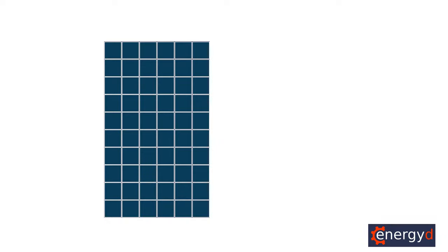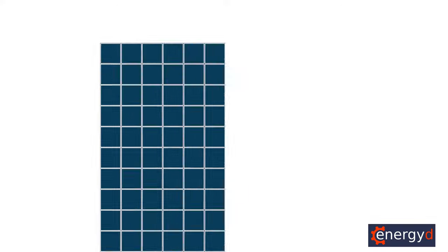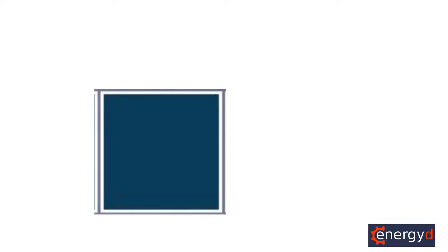To understand how shade affects solar panels, we first need to understand how solar panels work. At the heart of every solar panel are dozens of solar cells. Each of these cells produces a little bit of electricity when light falls on it.